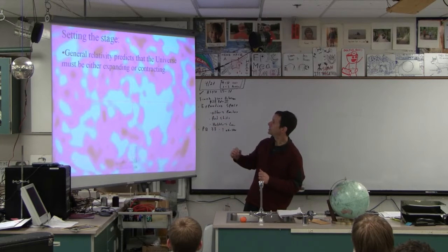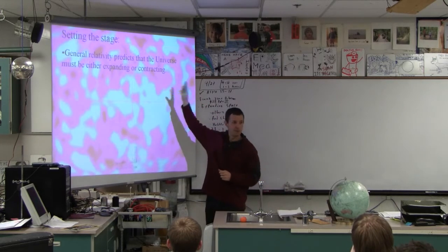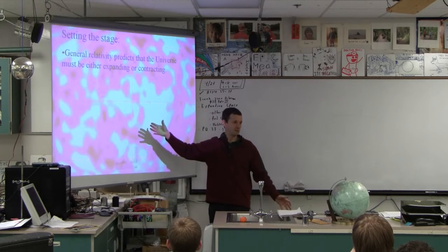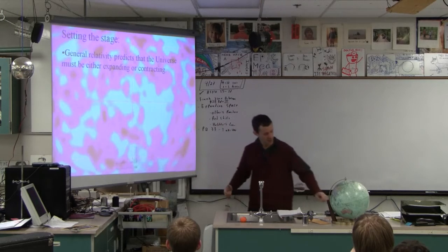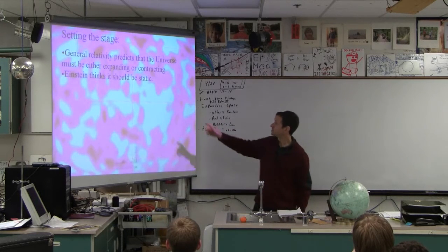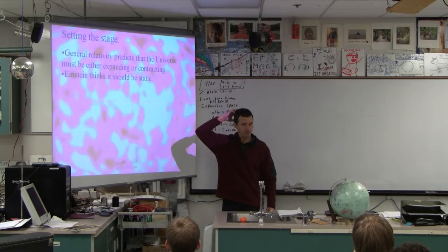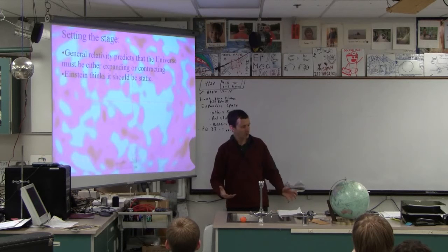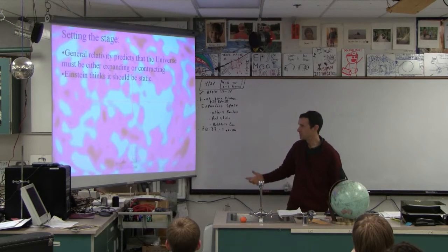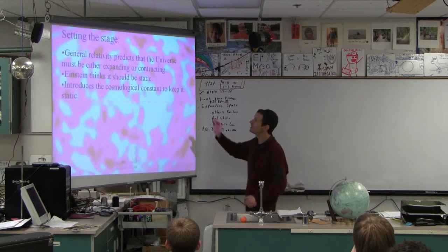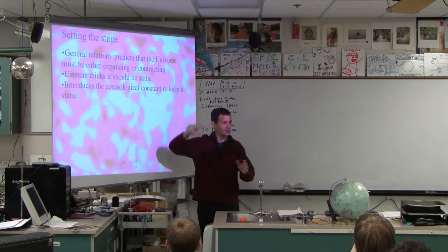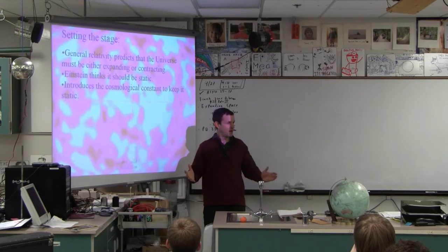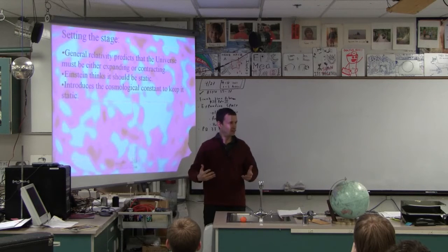General relativity predicts that the universe must be unstable. It must expand, or it must contract. It can't just be static. This is the original prediction of general relativity. Einstein thinks it should be static. This is just a belief that he has, because that's what he thinks it should be. This is not a scientific belief. This is probably more related to just a general belief, maybe part of his faith. So, what he does is he gets the general relativity, he gets this theory, and he looks at this, and he goes, look, it's unstable, but we know the universe has to be static, which is not true. But he thought that it had to be static.